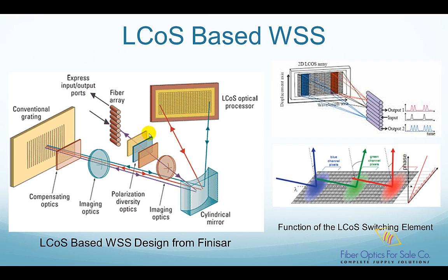In addition, the polarization is transformed into S polarization relative to the conventional grating, because the conventional grating has maximum diffraction efficiency at S polarization. Next, the light passes through the first imaging optics and is reflected by the cylindrical mirror. Then it passes through the second imaging optics. The light is collimated and projected onto the conventional grating. As discussed in the generic WSS design, the purpose of the conventional grating is to separate different wavelengths into different horizontal angles. As shown here, the red light and blue light are diffracted into different angles. The purpose is to project different wavelengths onto different portions of the switching element, which is the liquid crystal on silicon chip.